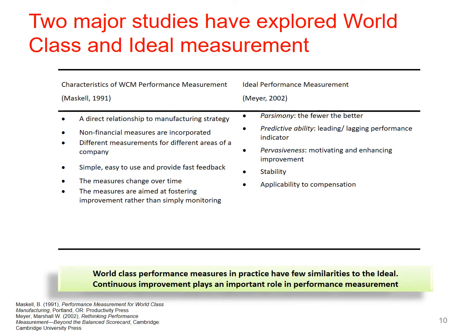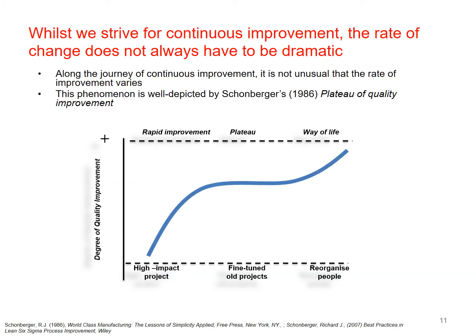There are a few similarities, and continuous improvement plays an important role in performance measurement. Whilst we strive for continuous improvement, the rate of change does not always have to be dramatic. Along the journey, it's not unusual for the rate of improvement to vary. This is well depicted by Schoeniger's plateau of quality improvement — we go through a period of high change and rapid improvement, then fine-tune for a while, reach our plateau, and then reorganise so that change becomes a way of life. It is actually quite important to have that plateau so that things can bed in.